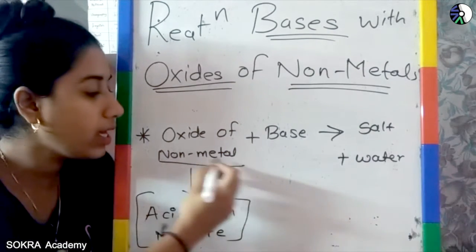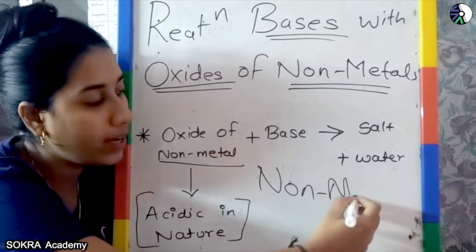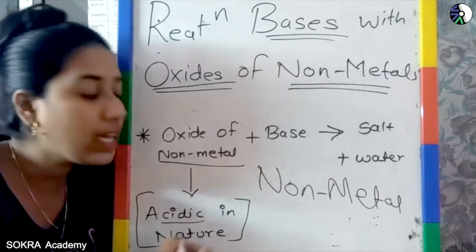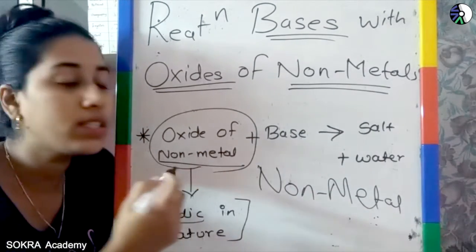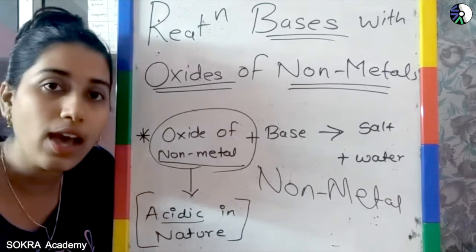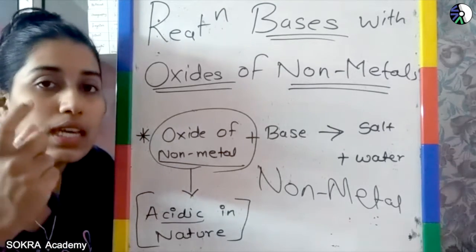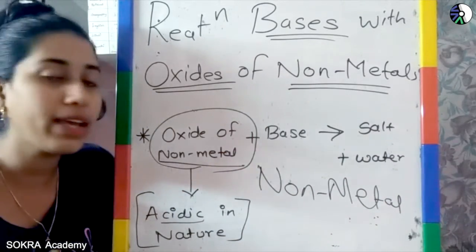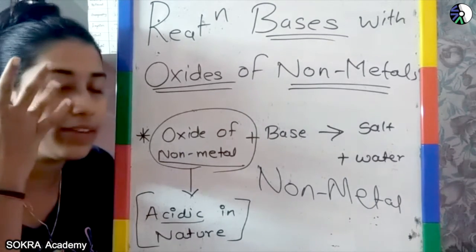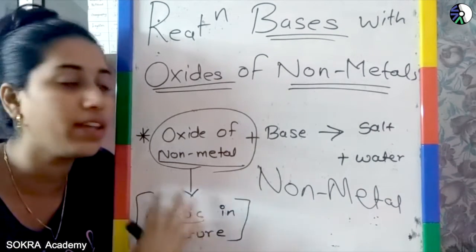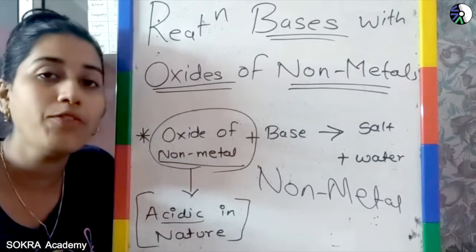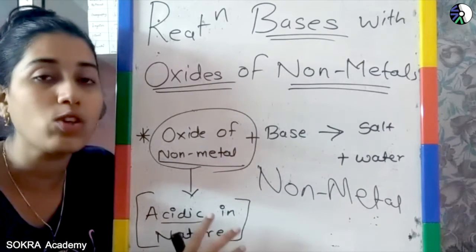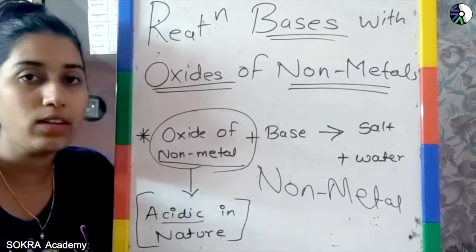When the oxides of non-metal with base ke saath, waha pe kya tha, acid tha, yaha pe kya lene rahe, hum logo base lene rahe. Waha pe metal tha, yaha pe hum logo non-metal use kar rahe. Toh kya form hoga? Salt plus water, it will produce. Abhi jo ye oxide of non-metal hai, jo non-metal hai, unka nature kya sa rata hai, unka nature is acidic in nature. When it react with a base, it will always give the salt plus water.